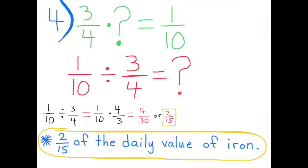Three-fourths times what number equals one-tenth? That can also be written as a division problem: one-tenth divided by three-fourths equals what number? One-tenth divided by three-fourths equals one-tenth times four-thirds, which equals four-thirtieths, or two-fifteenths. One cup of oatmeal would provide two-fifteenths of the daily value of iron.